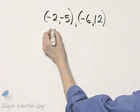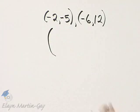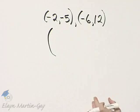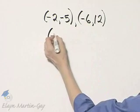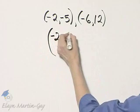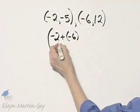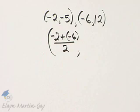To find the midpoint, the x value of the midpoint is the average of the x values of these points. So how do we find the average? We add negative 2 plus negative 6, and we divide by 2.